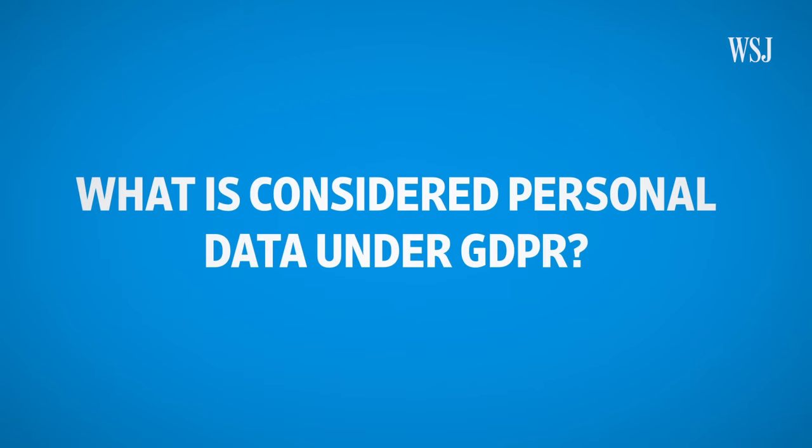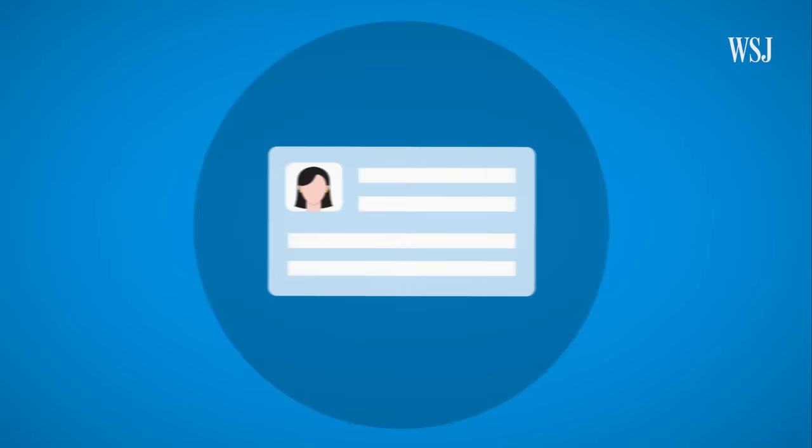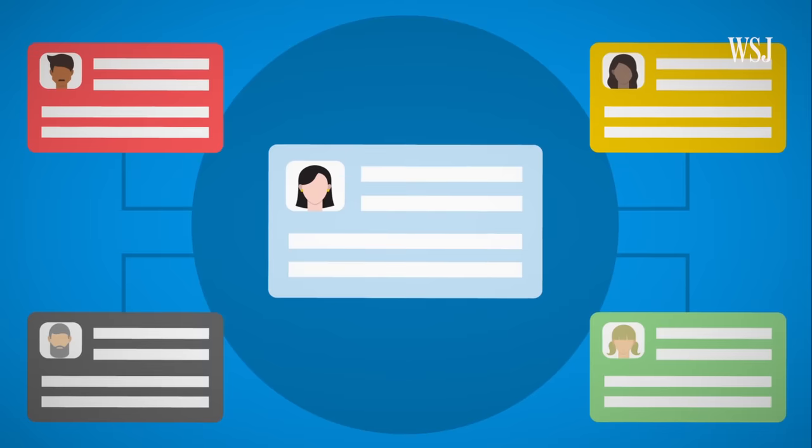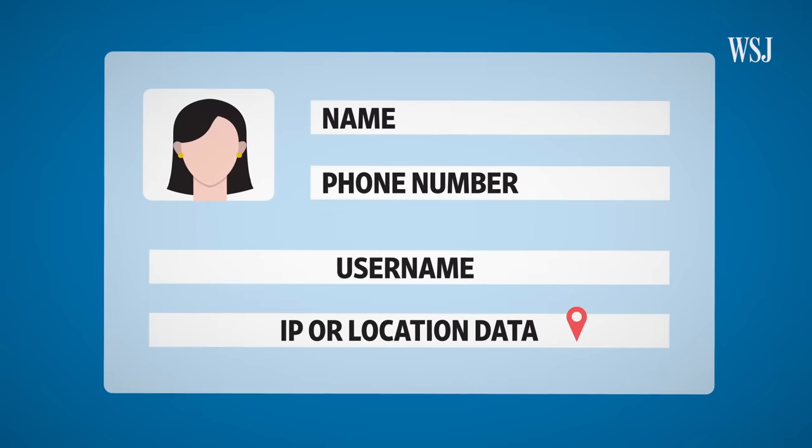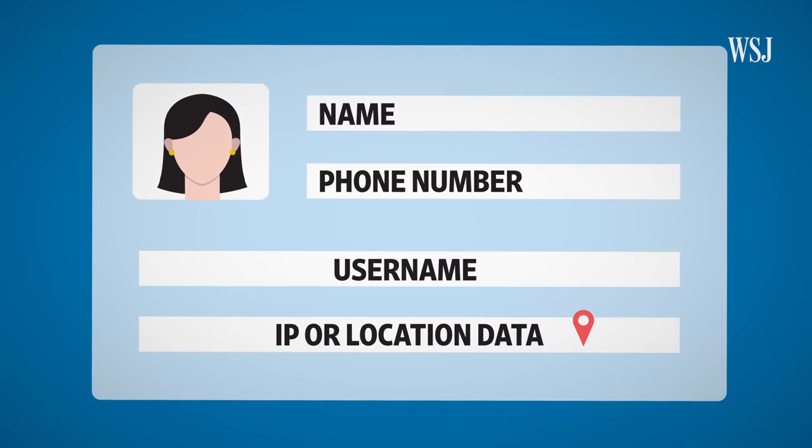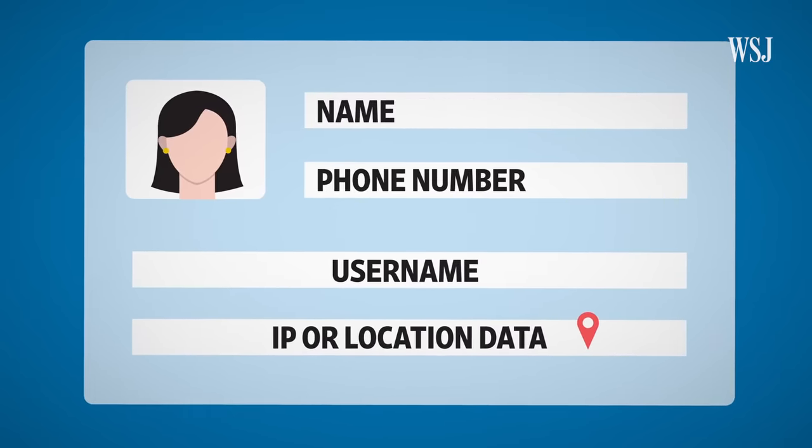What is considered personal data under GDPR? Any data that can identify you. That's your name, phone number or username, but the law also includes things like your IP address or location data.